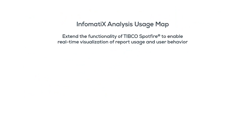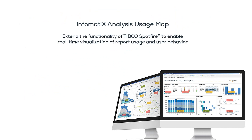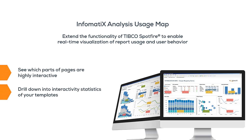Informatics Analysis Usage Map is a component of the Optimization Suite which extends the functionality of TIBCO Spotfire. It enables real-time visualization of report usage and user behavior. Analysis Usage Map provides insights into which parts of the report pages are highly interactive and lets you drill down into template interactivity statistics and summarizes them.